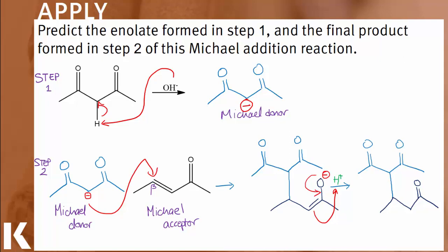Let's double check to make sure everything is accounted for. We have five carbons in the Michael donor and five carbons in the Michael acceptor, which means we should have 10 carbons in the product. Counting through the product: one, two, three, four, five, six, seven, eight, nine, ten — confirmed.